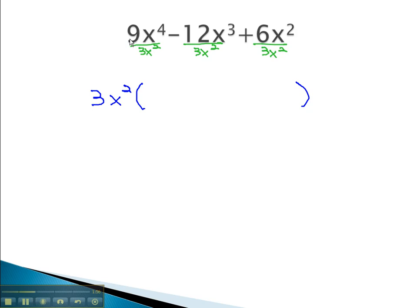Reducing the first fraction, 9 over 3 gives us 3x squared, subtracting the exponents. Minus 12 divided by 3 is 4x when we subtract the exponents. Plus 6 divided by 3 is 2, and the x squareds divide out.